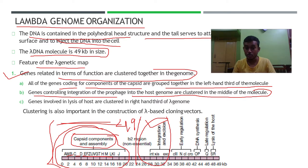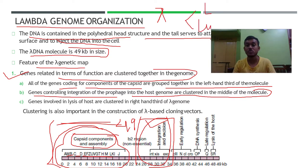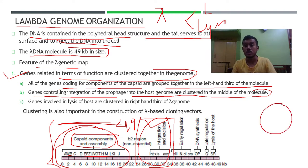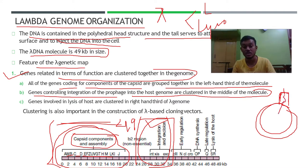Recapping from the previous video: the bacteriophage lambda has two cycles — the lytic cycle and the lysogenic cycle. When the genetic material of the bacteriophage is inserted into a bacterium, the integration of the host bacterium with the inserted bacteriophage DNA together is known as the prophage.